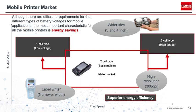Currently, the majority of mobile printers use a two-cell lithium-ion battery. Energy saving is, and will continue to be, one of the major requirements in this segment. Due to the focus on energy savings, the number of one-cell type printers is increasing. And there is a portion of the market where high-speed mobile printing is requiring the use of larger three-cell battery systems.